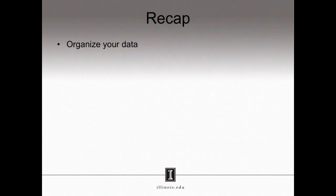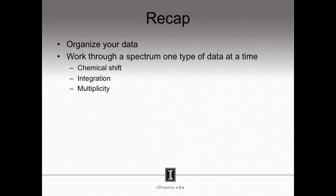That brings us to the end of this webcast. To recap, the most important thing you can do when interpreting NMR spectra is to organize your data. This process begins by working through a spectrum one aspect at a time. Label your signals in the NMR spectra, and then identify their chemical shift, their integration, and their multiplicity. With that information in hand and organized, it will be easier to see how all the different pieces fit together.